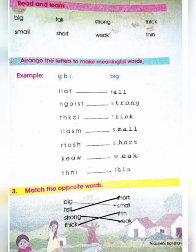Next question is: match the opposite word. Aapko words diye hain, in ko opposite karna hai. Opposite means ulte. Big — Big ka opposite hai Small. Big means bada aur Small means chota. Next hai Tall — Tall means lamba, to aapko isko match karna hai Short se — S, H, O, R, T — Short. Next diya huye hai Strong — Strong means mazboot, to isko Weak se match karna hai — W, E, A, K — Weak. Next diya huye hai Thick — Thick means mouti, to isse match karna hai Thin se — Thin means patli. Thank you.